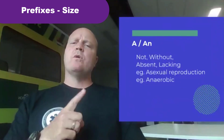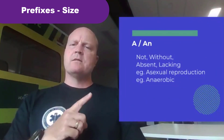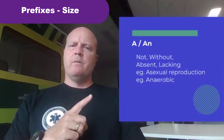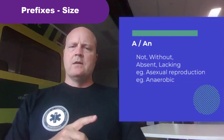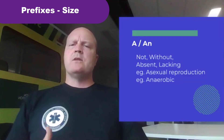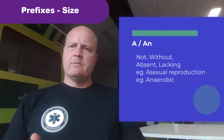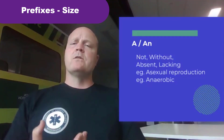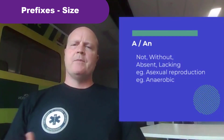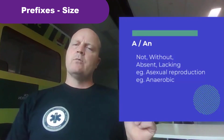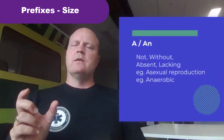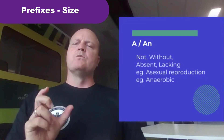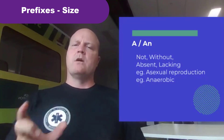Then we've got 'a' or 'an'. If we see this at the start of a word it means not, without, absent, or lacking. So for example, asexual reproduction is reproduction without sex. And anaerobic — aerobic means to do with oxygen, so anaerobic is working without oxygen.